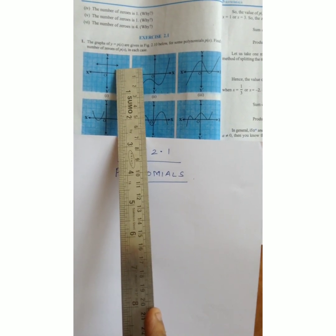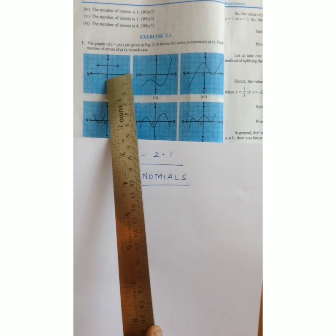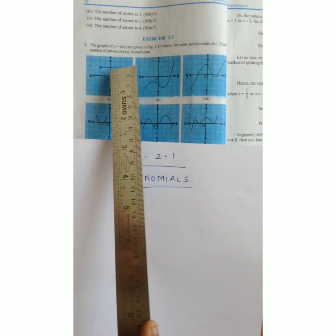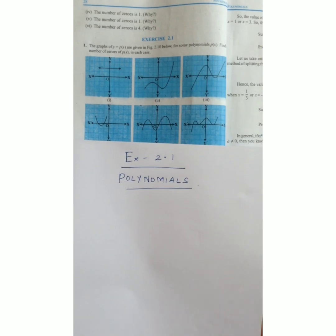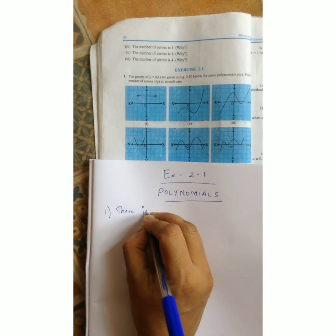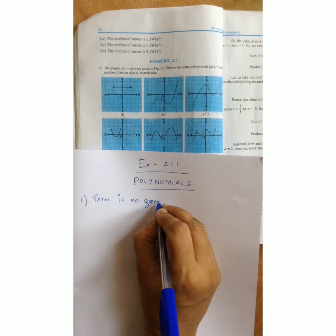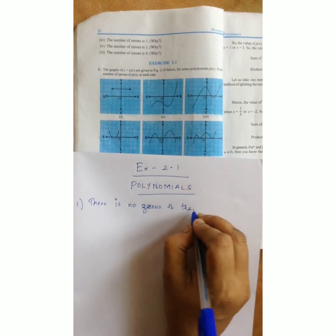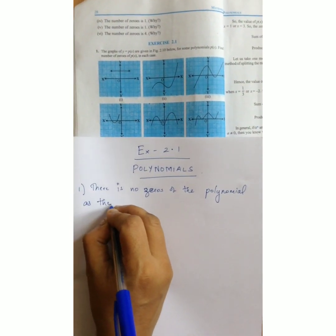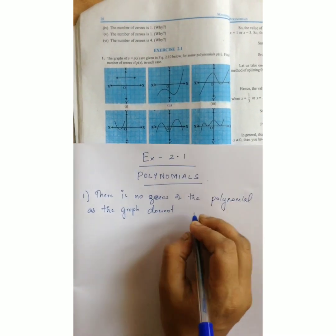Where the graph intersects the x-axis is your zeros of the polynomial. In this sum, the graph does not intersect with the x-axis. So there are no zeros of the polynomial, as the graph does not intersect with the x-axis.